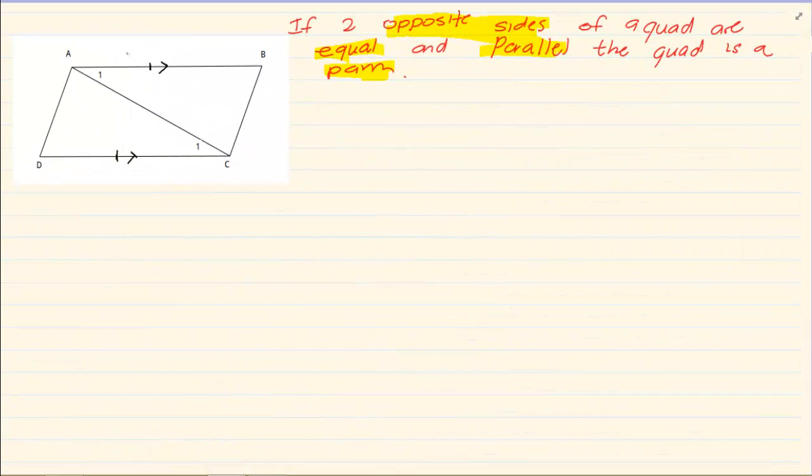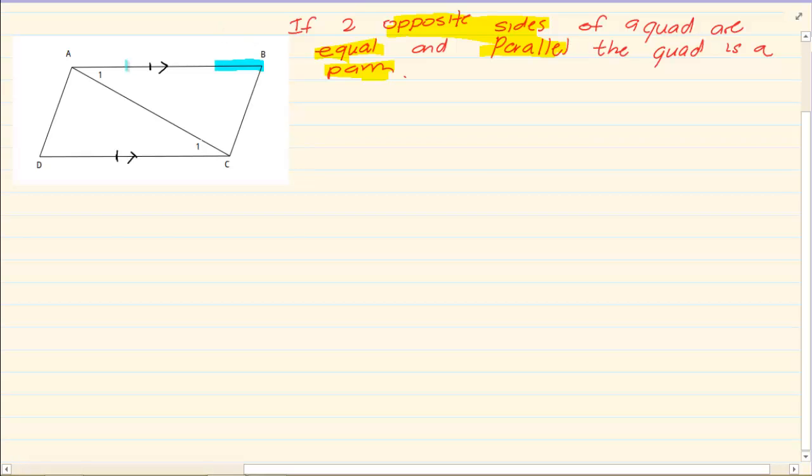So what are they saying? They are telling us that they are giving us one side and the one opposite it—two opposite sides. And they are telling us that they are equal in length and they are parallel.